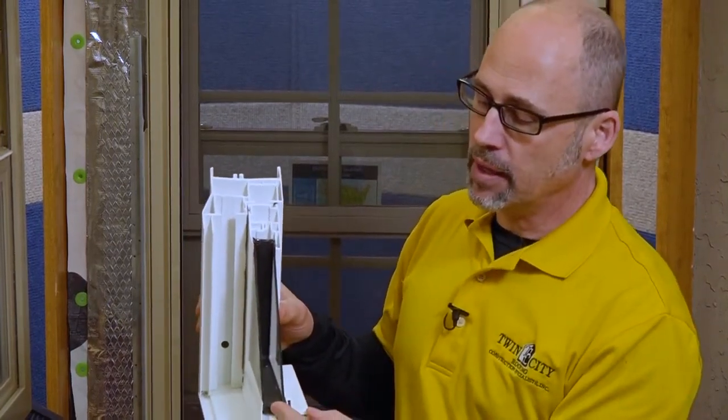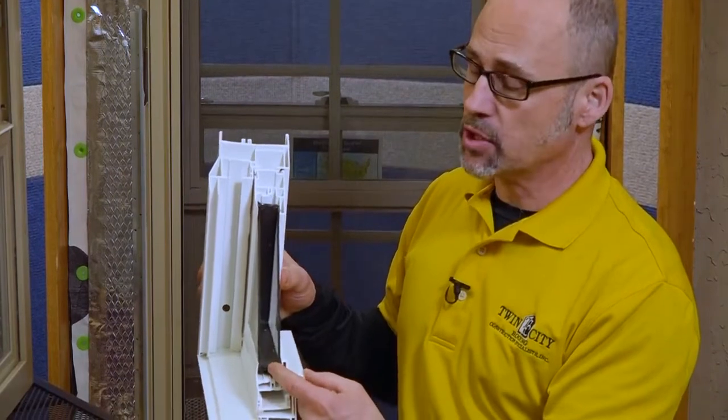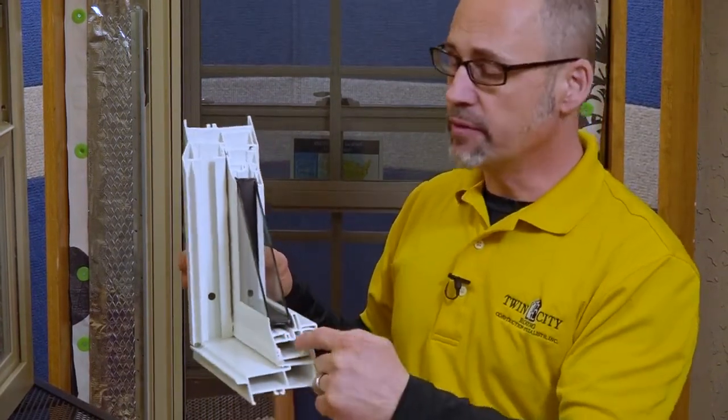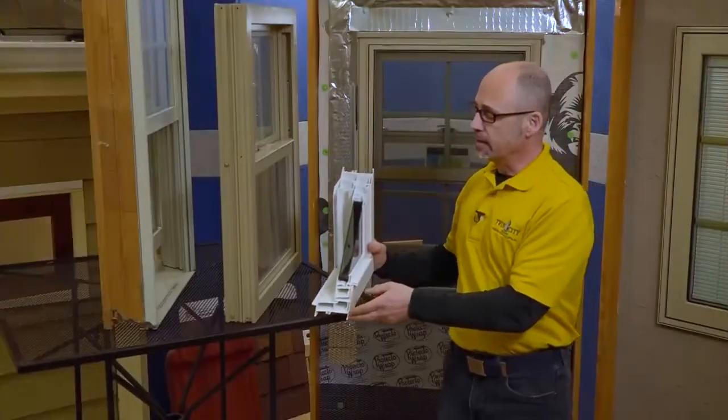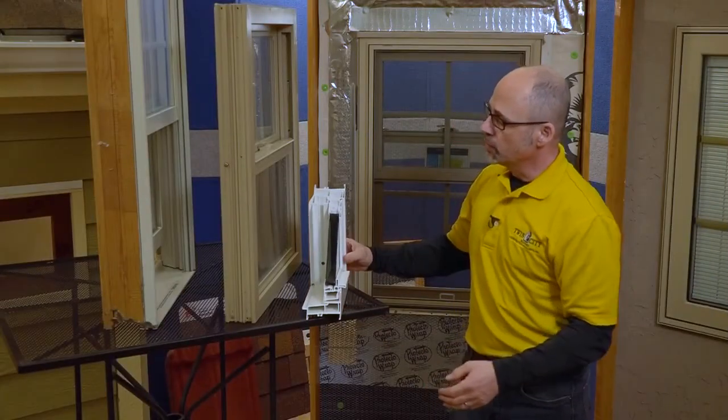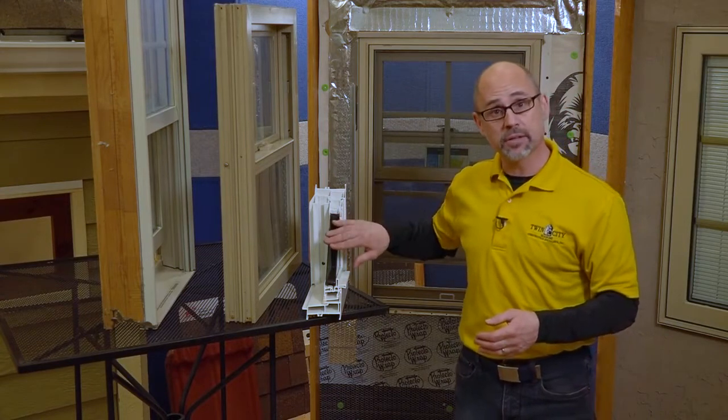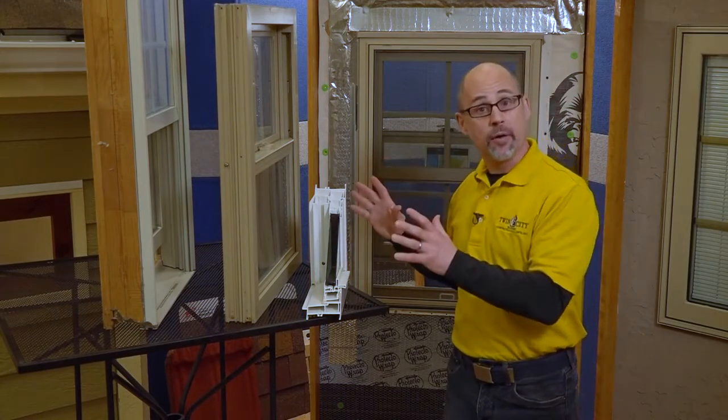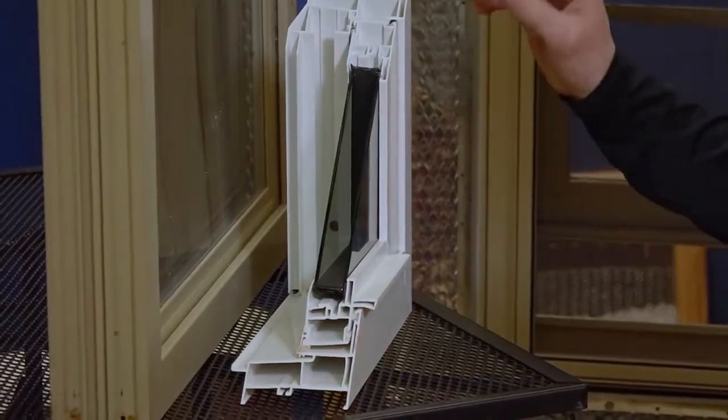And here, this black tape product, it's actually called butyl tape, is what helps to seal the glass pack to the frame of the window. Finally, manufacturers will apply an inert gas inside of the glass chamber, which helps to give the window a U-value, or what we call an insulation factor.